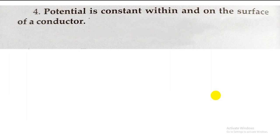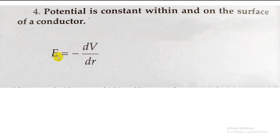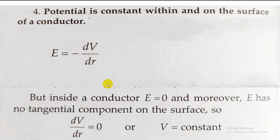Moving to the next point: the potential is constant within and on the surface of a conductor. This follows from the fact that the electric field inside is zero. Using the relation that electric field equals the negative gradient of potential, we have dV/dr equals zero, which means V is constant. So always remember: at the surface and inside the surface of a conductor, the potential is always a constant quantity — potential does not change because the electric field is zero.